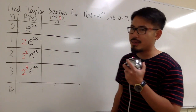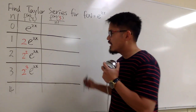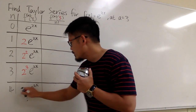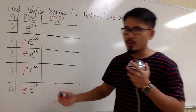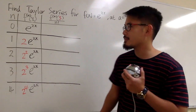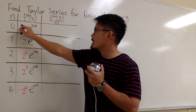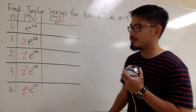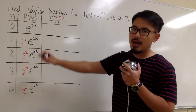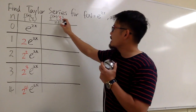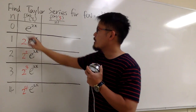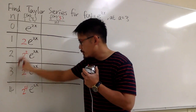Pretty much it's 2 to the nth power. The fourth derivative is e to the 2x times 2 to the 4th power. And the very first one is 2 to the 0 if you like. Now let's work out the Taylor formula — plug in 3 for x and divide by n factorial according to the n values.